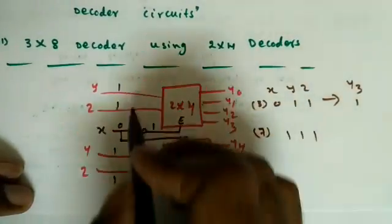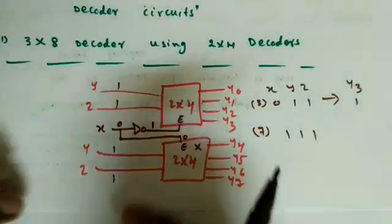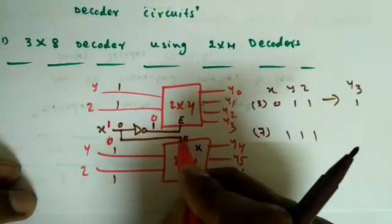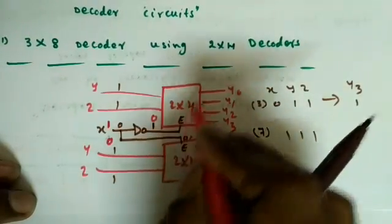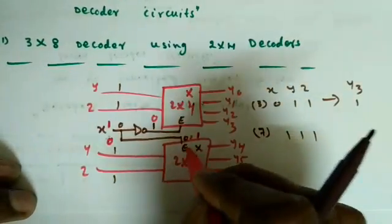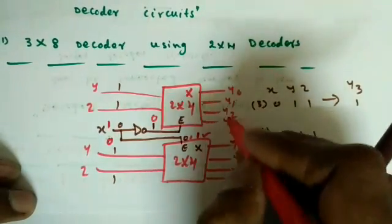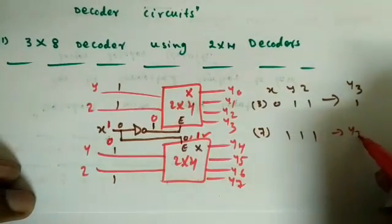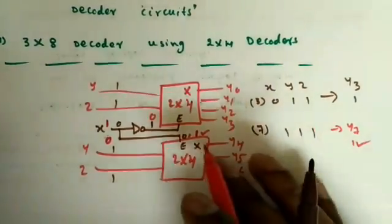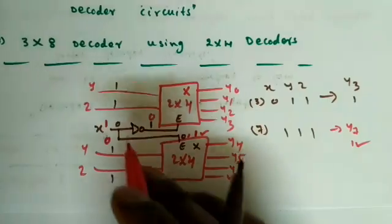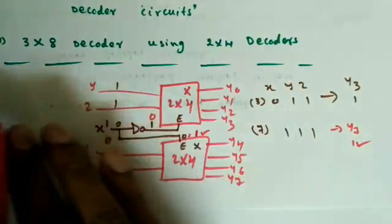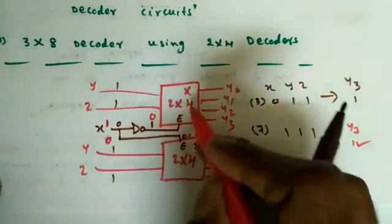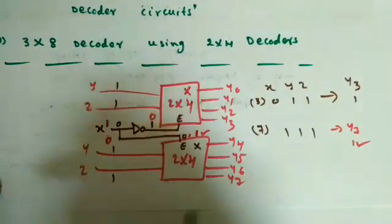Now for xyz = 111, which is decimal 7: y and z are again 11, but now x=1. So the upper decoder is off (all zeros) and the lower decoder is enabled. With yz=11, the lower decoder outputs y7=1, remaining all zero. The key principle: whichever input is constant for half the truth table becomes the enable input. For x=0, upper part works; for x=1, lower part works.